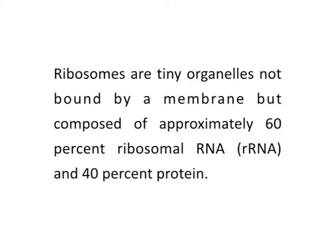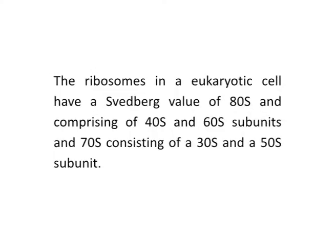Ribosomes are tiny organelles not bound by a membrane but composed of approximately 60% ribosomal RNA and 40% protein. Eukaryotic ribosomes are produced and assembled in the nucleus. Ribosomal proteins combine with the ribosomal RNA strands in the nucleus to form two ribosomal subunits — one small and one large — described by their Svedberg or S values based upon their rate of sedimentation in a centrifuge. The ribosomes in a eukaryotic cell have a Svedberg value of 80S and comprise of 40S and 60S subunits, and 70S ribosomes consisting of a 30S and 50S subunit.